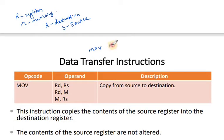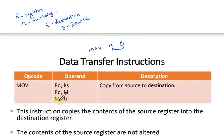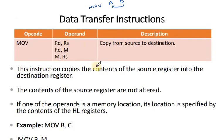MOV RD, M means the memory location is the source and a register is the destination. MOV M, RS means a register is the source and a memory location is the destination. This instruction copies the contents of the source register into the destination register, and the contents of the source are not modified. If one of the operands is a memory location, its location is specified by the contents of the HL register pair.